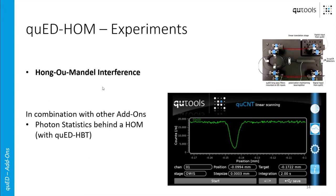In combination with other add-ons, it's especially nice to put the HBT setup — which is basically another beam splitter — behind the Hong-Ou-Mandel setup in one of the output ports, where you can actually observe that the number of two-photon events in that output port rises at the corresponding spot.